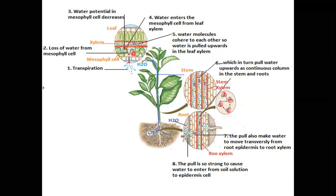Leaf ke mesophyll cells dikaye gaye hain. Stomata ke zariye water ka loss ho raha hai. Jab stomata ke zariye water ka loss hota hai to mesophyll cells se water intercellular spaces mein aata hai — mesophyll cells se water evaporate hokar intercellular spaces mein aur wahan se stomata ke zariye bahar jata hai. Toh jab mesophyll cells se water ka loss hota hai, mesophyll cells mein water potential kam ho jata hai.